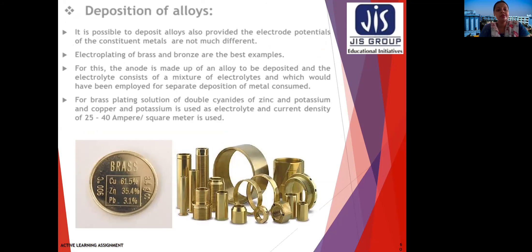Deposition of alloys: it is possible to deposit alloys provided the electrode potential of the constituent metals are not much different. Electroplating of brass and bronze are the best examples. For this, the anode is made up of the alloy to be deposited, and the electrolyte consists of a mixture of electrolytes. For brass plating, a solution of double cyanides of zinc and potassium and copper and potassium is used as electrolyte, with a current density of 25 to 40 amperes per square meter.